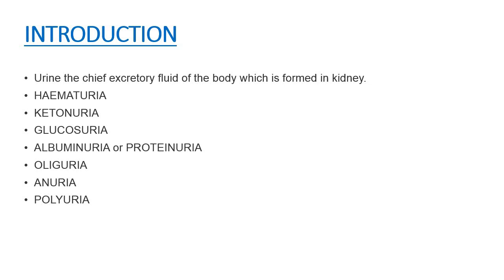For example, the presence of red blood cells, that is RBCs, in urine is referred to as hematuria. Hematuria indicates conditions like tuberculosis, cancer, renal stones, and acute inflammation of the kidney.